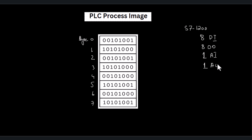It has eight digital input channels, eight digital output channels, one analog input channel, one analog output channel, and two bytes of memory. Before getting into the detail of the PLC process image, let's recall the PLC architecture and its working.